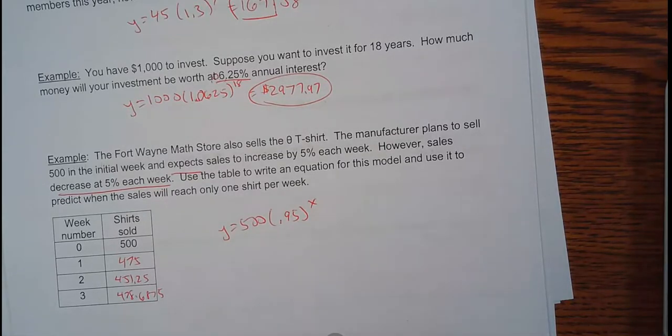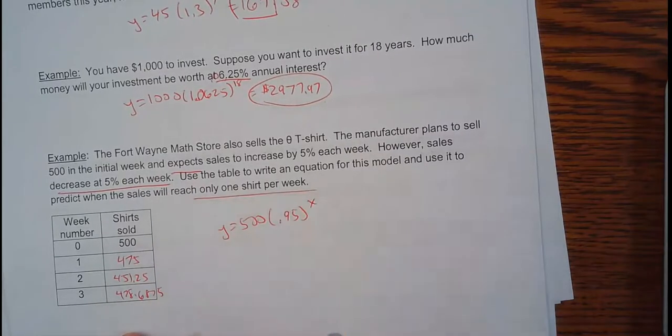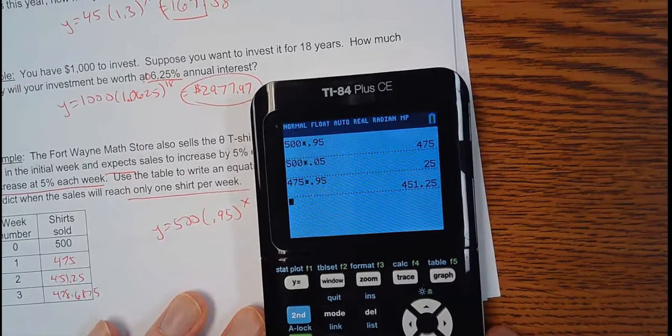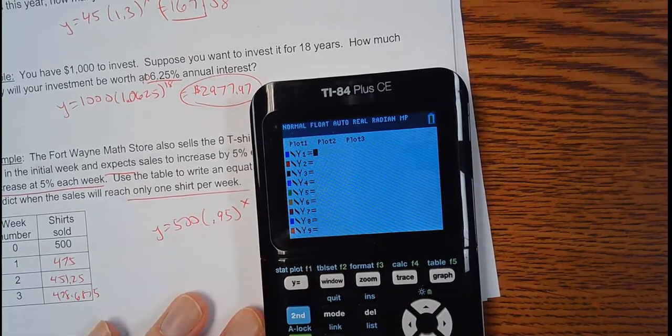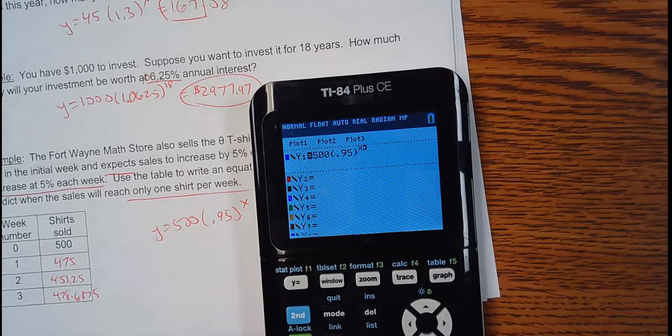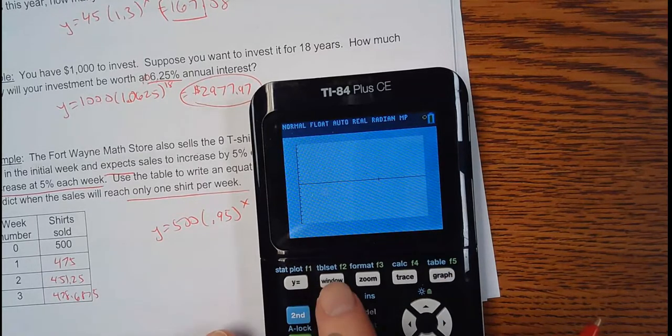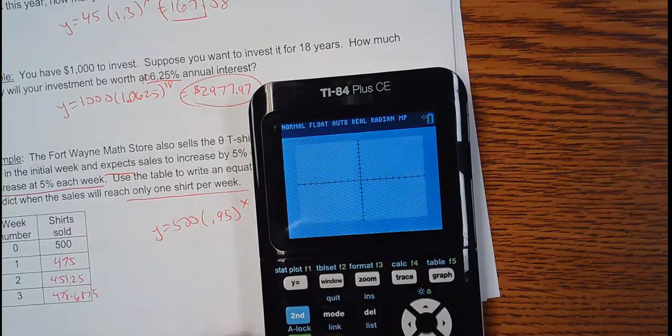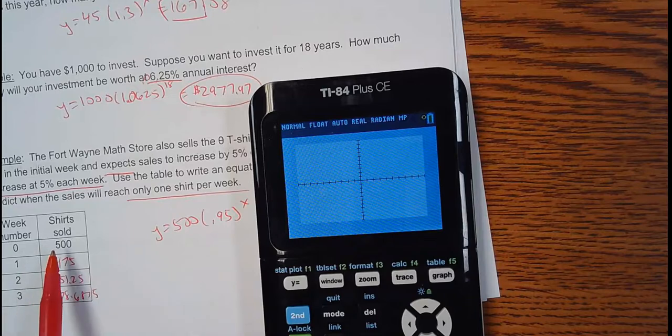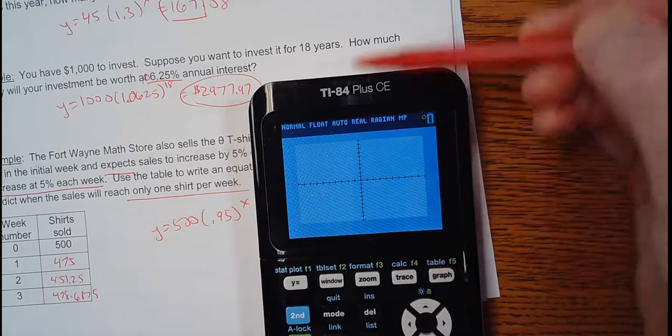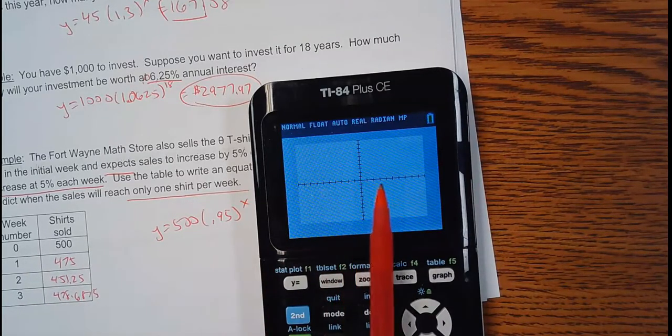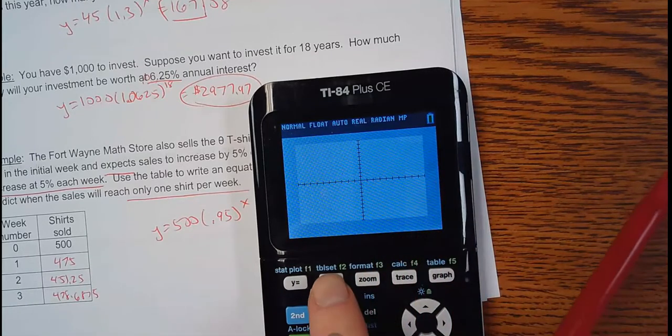Use it to predict when the sales will reach only one shirt per week. Let's do this. We're just predicting here. We're not going to get the perfect. We're just trying to look ahead. Let me graph that. So, let's graph 500 times 0.95 to the x power. When I graph this, what am I looking for? This is a weird window. Let me do this. I'll just go back to the standard window. So, what's going on here, you may not even see this on the graph because my y-intercept is 500. This is 10. So, that's off the graph. And how many weeks will it take? After three weeks, I'm still selling 478.